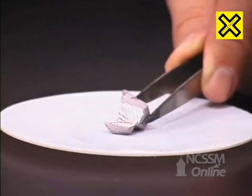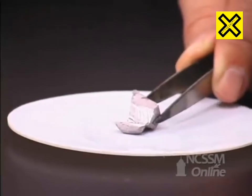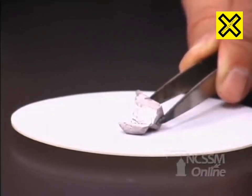As we cut off the oxide layer, we can see the shiny metal underneath. It coats over very rapidly with a layer of oxide.